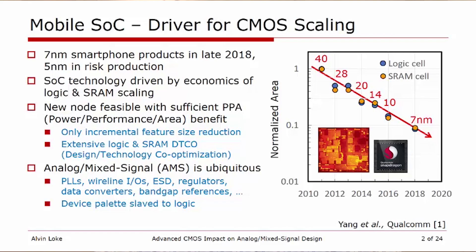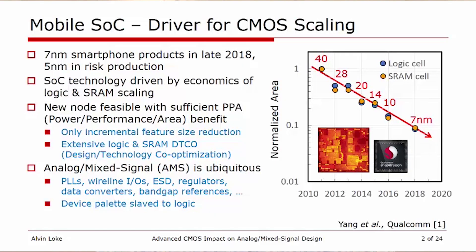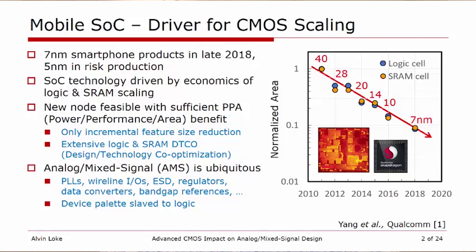The feature size has only been incrementally reduced, while most of the area reduction has come from extensive logic and SRAM design-technology co-optimization. With that said, analog mixed-signal subsystems are ubiquitous in SoCs — things such as PLLs, wireline IOs, ESD regulators, data converters, bandgap reference, and so forth, are all absolutely critical components of an SoC.